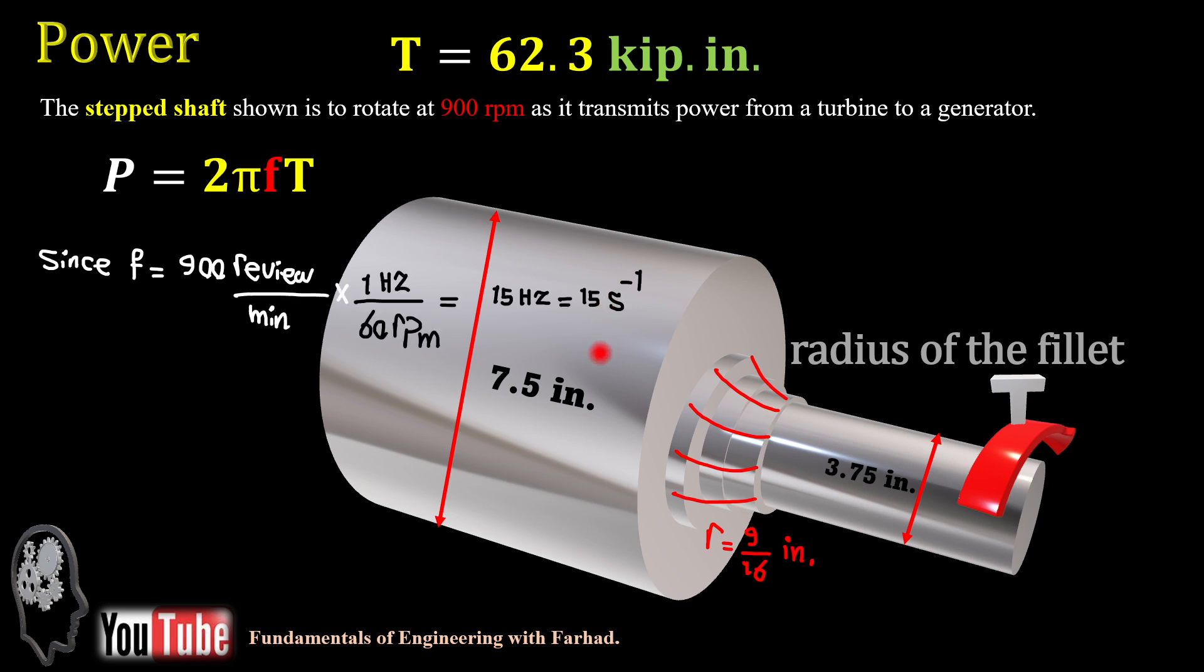The formula for power is 2 pi frequency times torsional torque. Since our frequency is 900 rpm, then 1 hertz equals 60 rpm. Cancel out the units, it gives us a frequency of 15 hertz, or 15 per second.